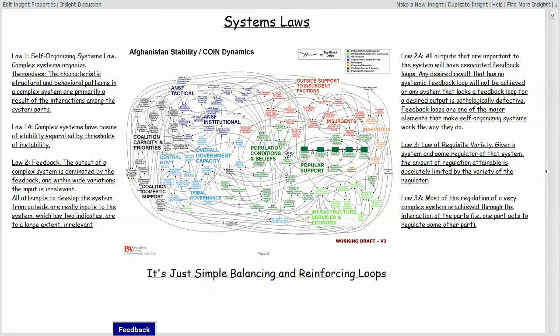So individual disconnected inputs from different places are likely to have a very minimal effect on the system. And the corollary to that is that all outputs that are important to the system will have associated feedback loops. Because the output is governed to a great extent by the feedback that happens as a result of that output, if there are outputs from the system that are desired, there needs to be feedback from that output back to the system so that it understands the implications of that output. Otherwise, that output isn't likely to be maintained or achieved.